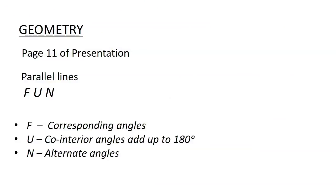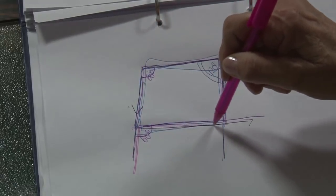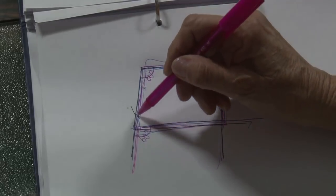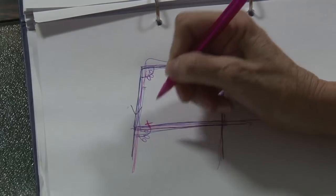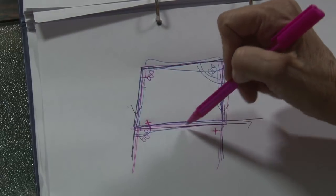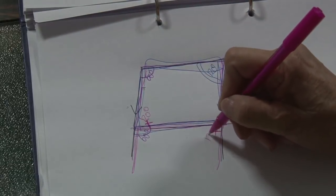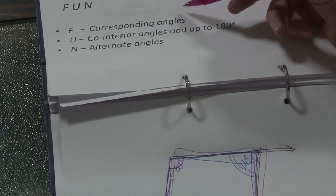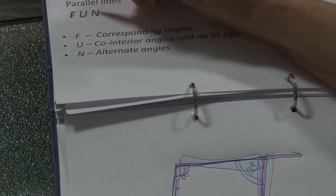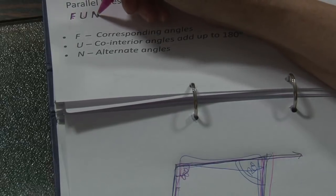The N stands for alternate angles. The N in the diagram shows that that angle will be the same as this angle — alternate angles are equal. So remember the three rules: corresponding angles (F) are equal; co-interior angles (U) add up to 180 degrees; and alternate angles (N) are equal. That is geometry from the presentation.